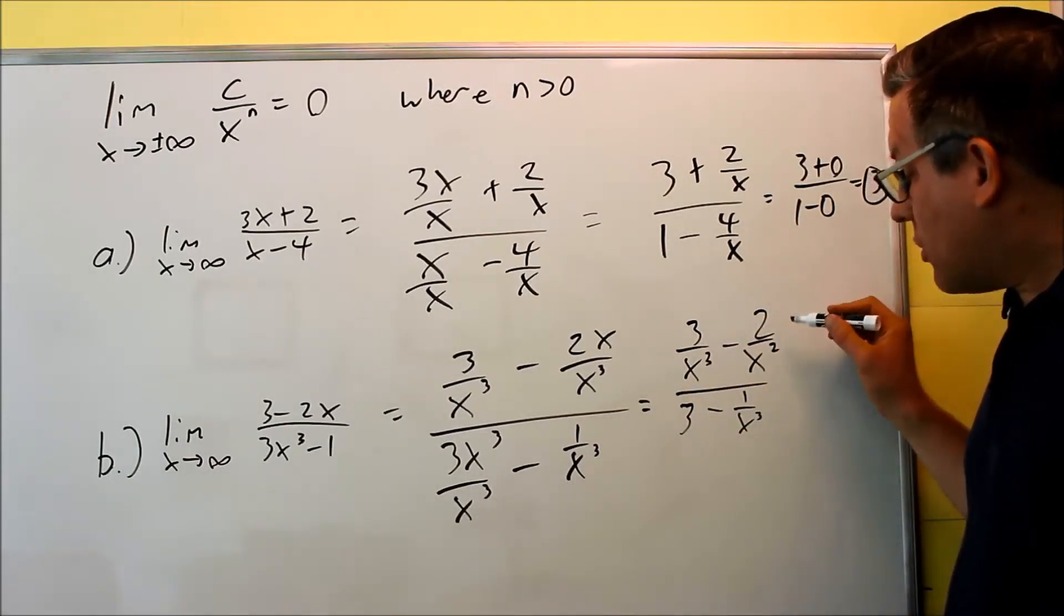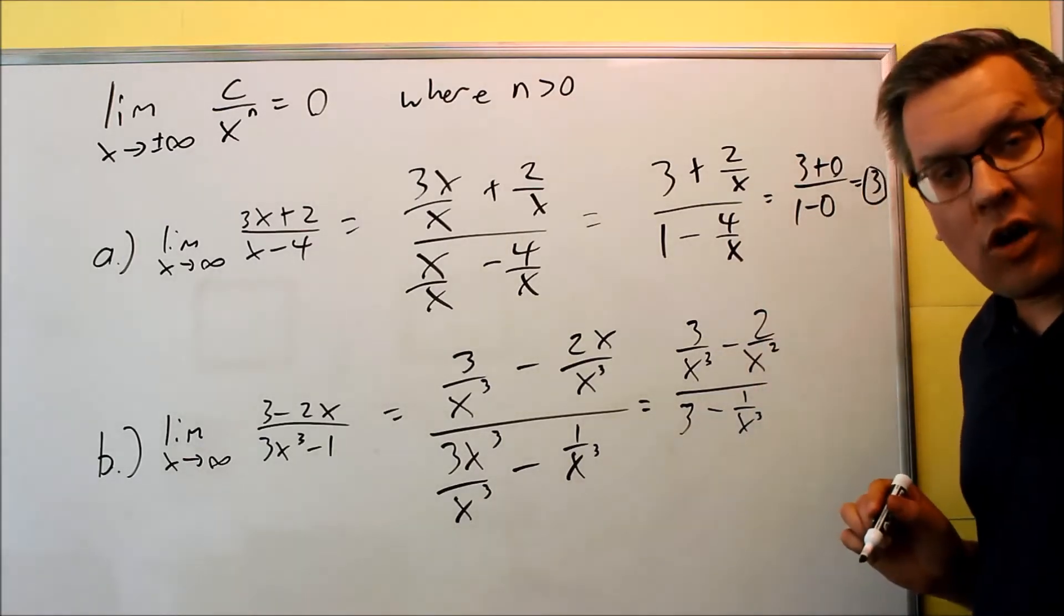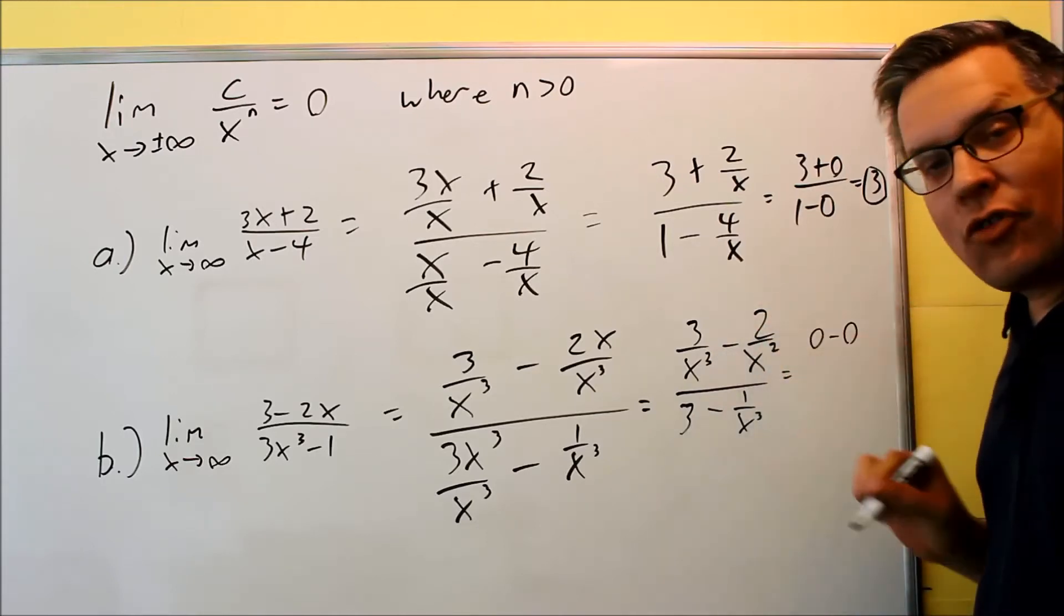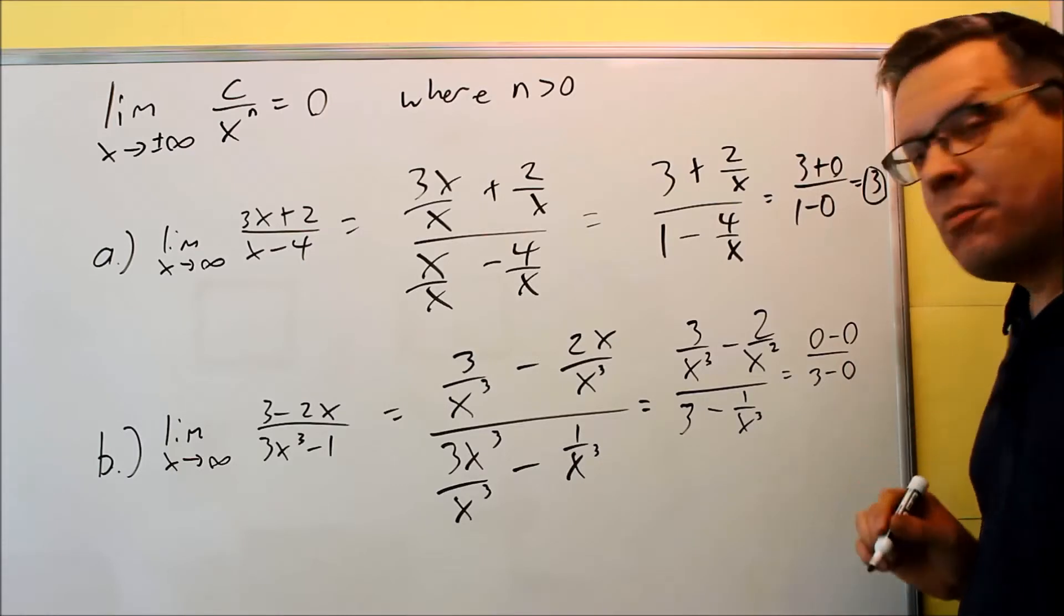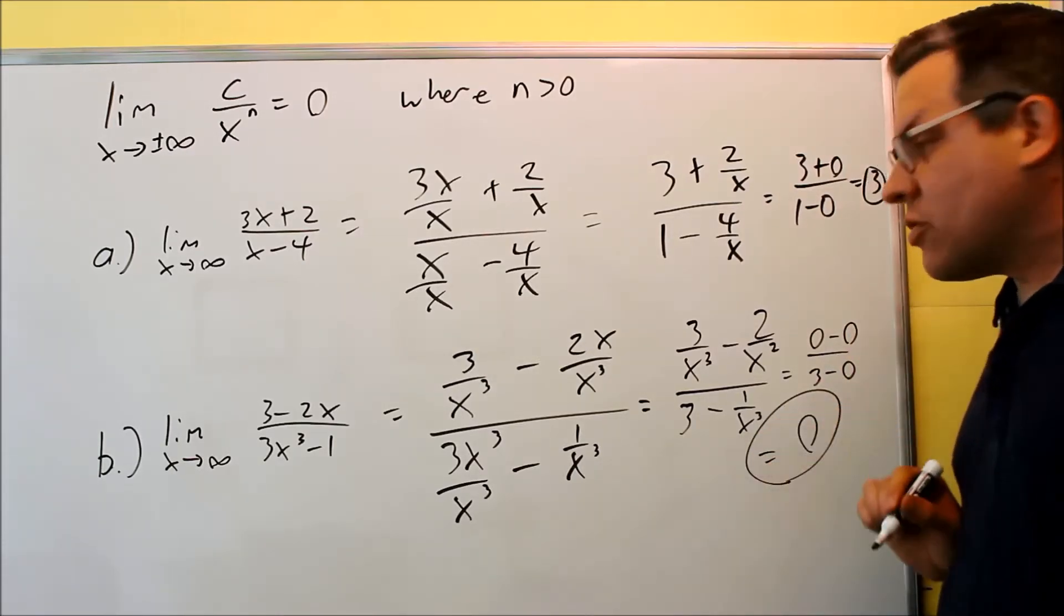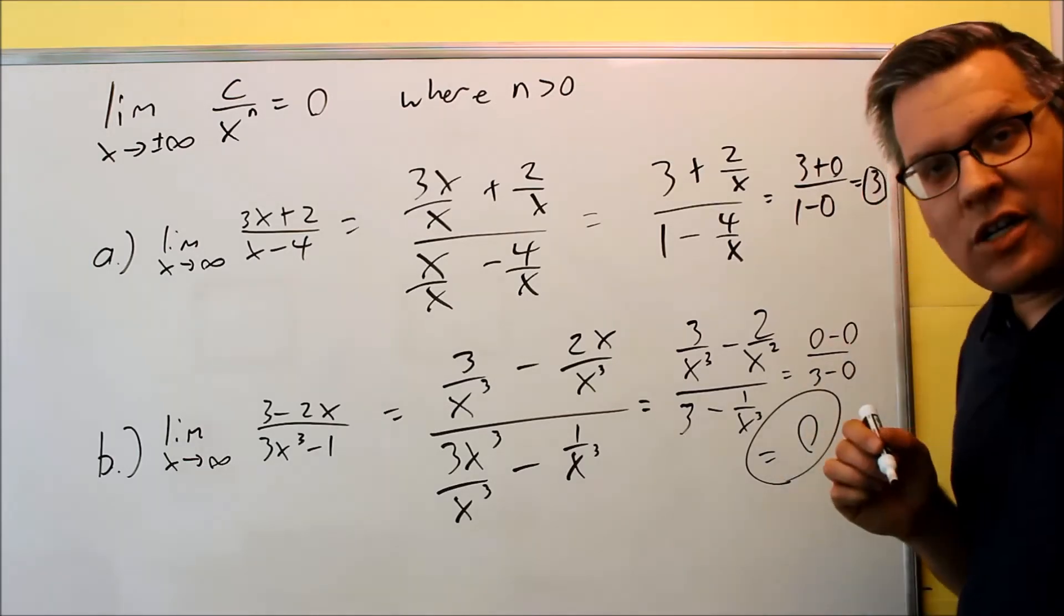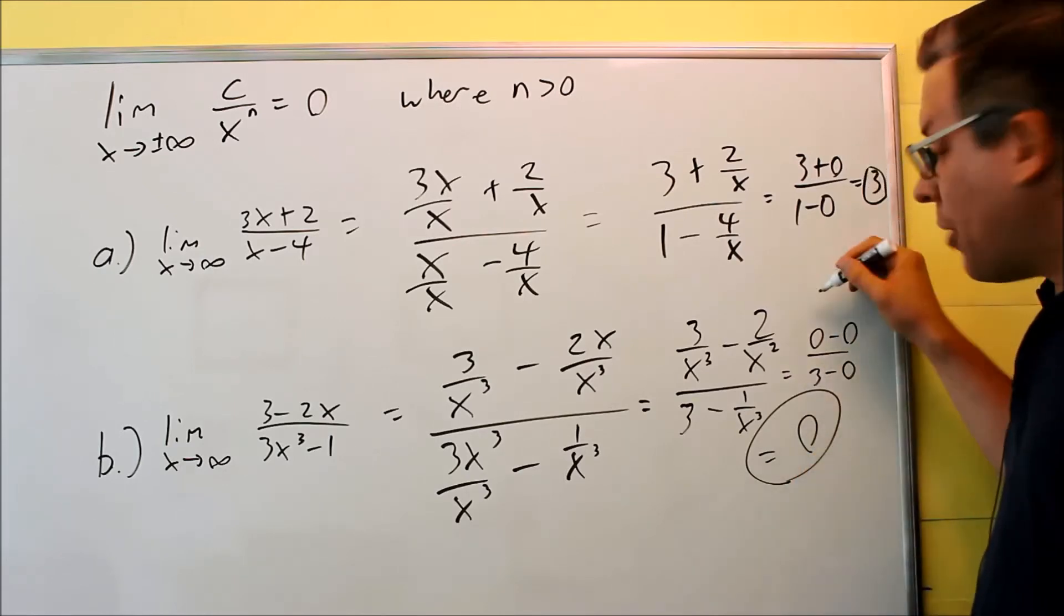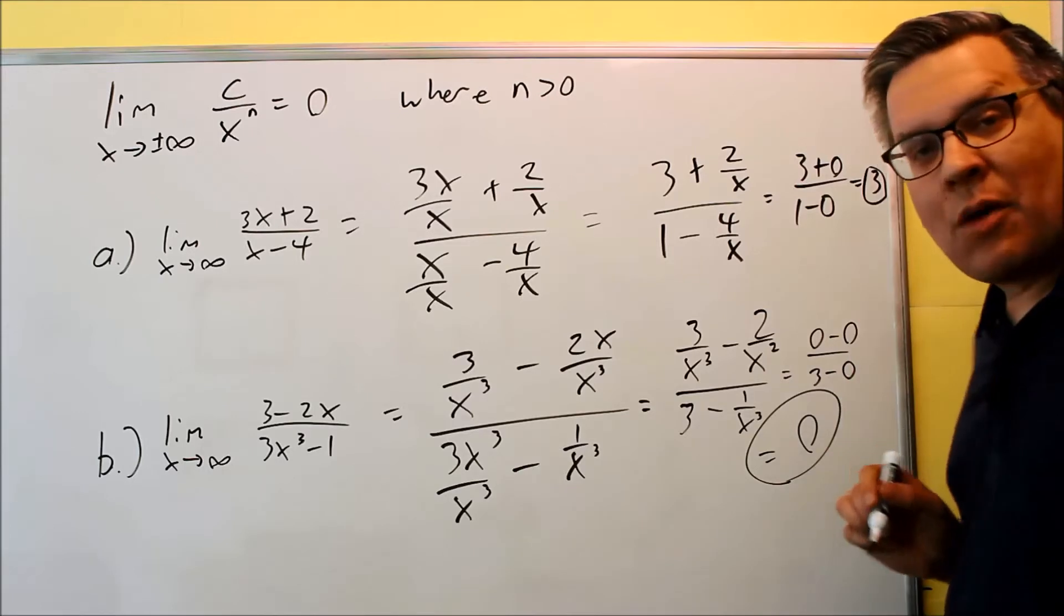What happens is everything that has a constant over X to a higher power, that's all going to go to 0. So in this case, I get 0 for the first one. I get 0 for the second one. At the bottom, I have 3 minus 0. 0 divided by anything is 0, which means that the answer to the whole problem is going to be 0. So I get 0 over 3. That is defined. The only time it's not defined is if I have a number on top divided by 0, then I can't do that one. But in this case, 0 on top is okay.